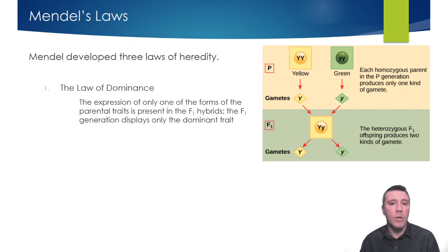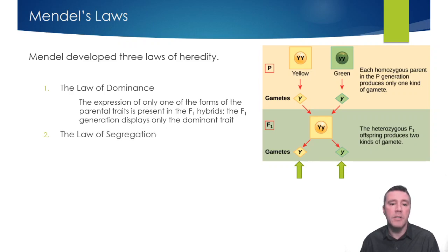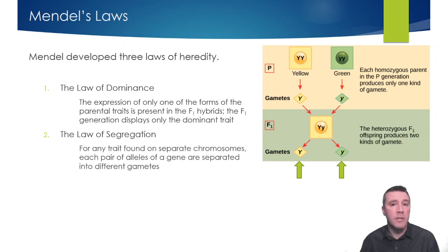Mendel's second law relates to the probability of passing on a given allele from heterozygous individuals in the F1 generation. The heterozygous F1 individuals produce two kinds of gamete: 50% of the time containing a dominant allele and 50% of the time the recessive one. This is Mendel's Law of Segregation, which states that meiosis separates the alleles that an individual has into different gametes. Additionally, the alleles for a trait found on separate chromosomes will be separated into different gametes.